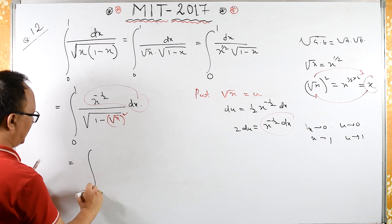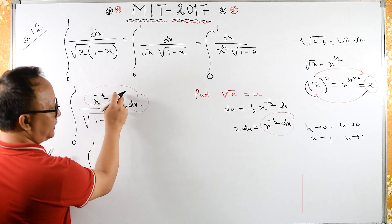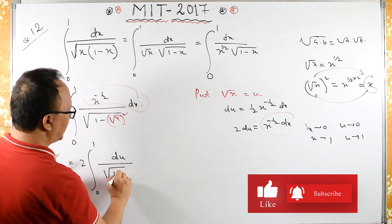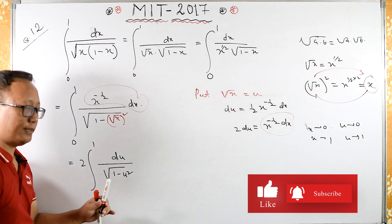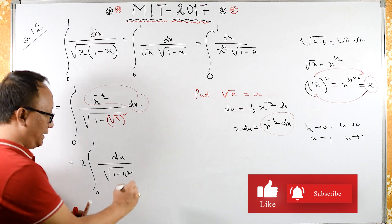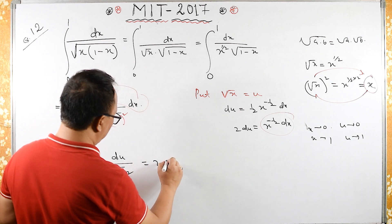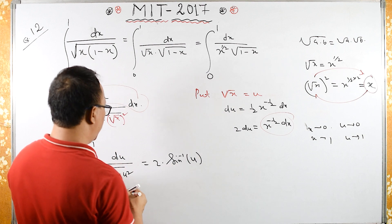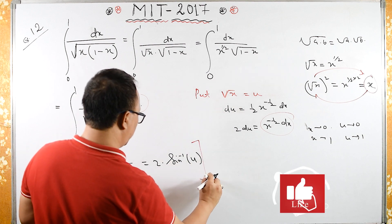So this is the same as the limit from 0 to 1 of 2 du upon square root of 1 minus u squared. Remember this formula? This is sin inverse u, and the limit is from 0 to 1.